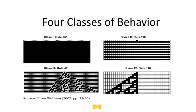So what we've seen with this simple one-dimensional cellular automata model is: it's easy to make rules where everything just dies, easy to make rules where everything just blinks, there are some rules like rule 30 where things appear to be random and you can actually prove it, and then there are rules like rule 110 that create complexity.